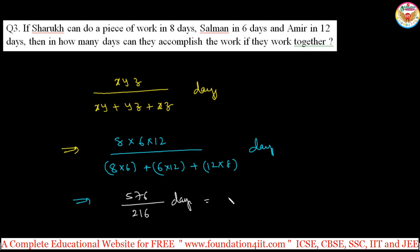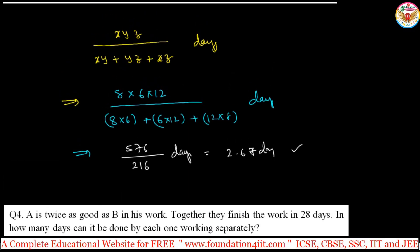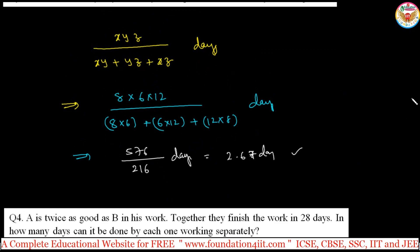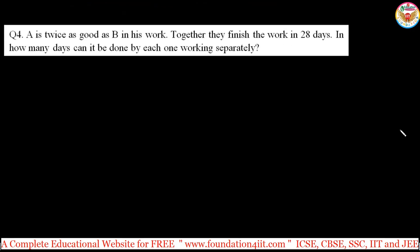So, 576 / 216 days, which is approximately 2.67 days. The answer must be less than the smallest individual time because all 3 are working together. You can expect a maximum of 3 members in exams, and the same formula applies for 4 members with the next extended term.